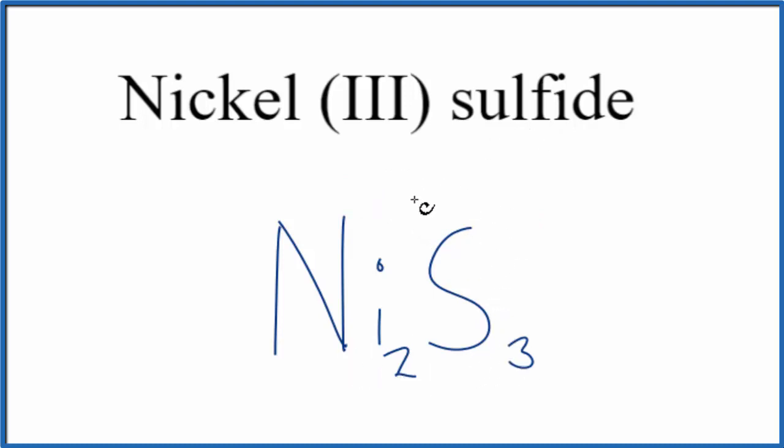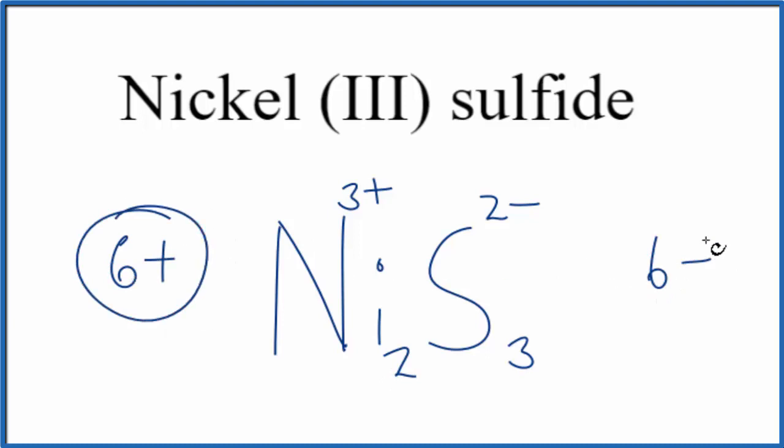Let's check our work, though. We said nickel, that's nickel 3, so 3+ sulfur is always 2-. 3 times 2-, that's 6-. 2 times 3+, 6+, 6-.